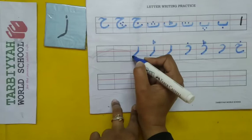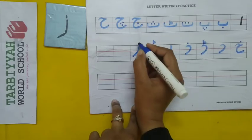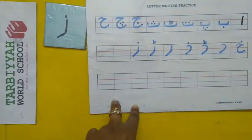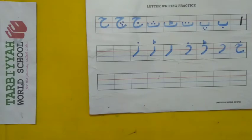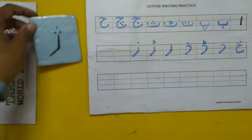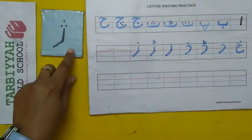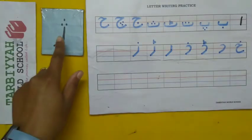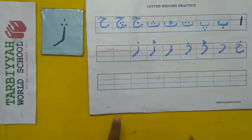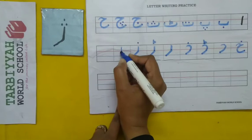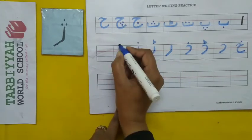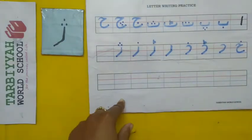One standing line and one slanting line, and one dot. Like this. Children, tell me the next letter. Yes, the next letter is Ye. So how do we write Ye? Same shape — standing line, slanting line, and three dots. Ye.